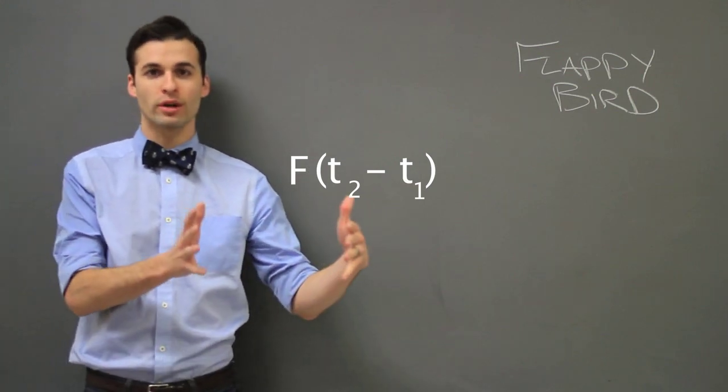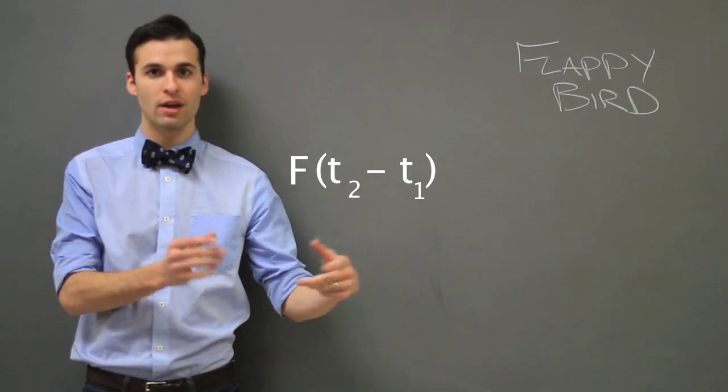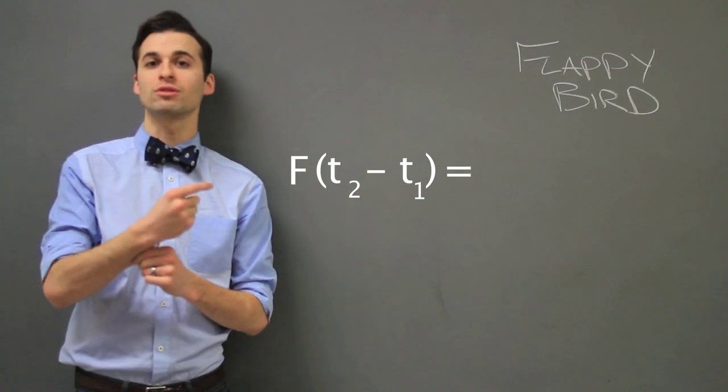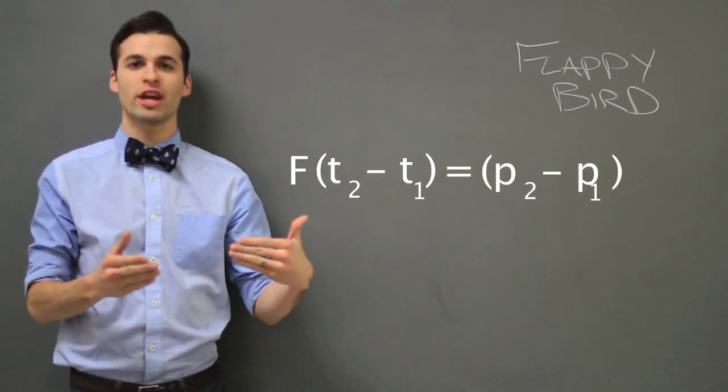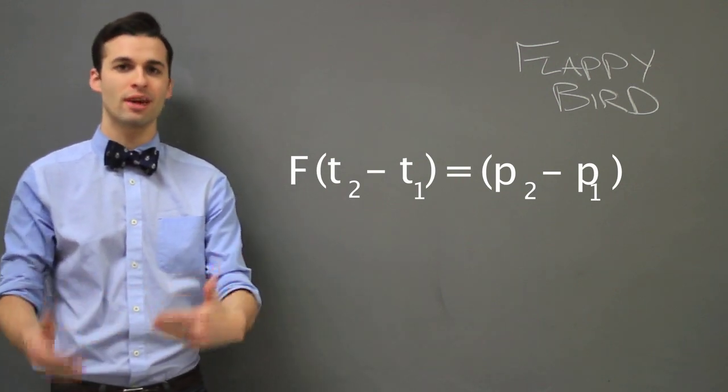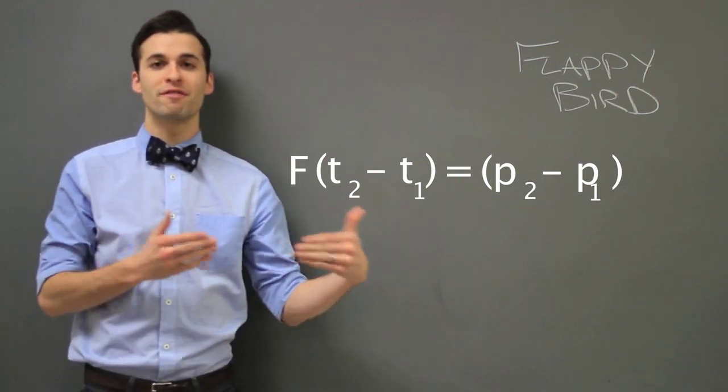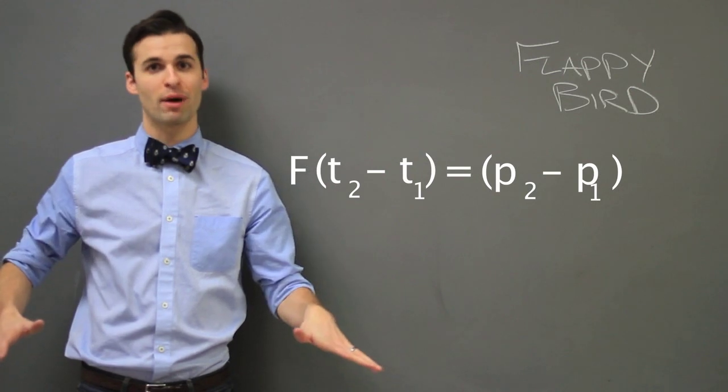And that force applied is going to change your velocity. F delta T equals the change in momentum. Depending upon whether the change in time was 0.1 or 0.067 gives you a very different force applied by the wings.